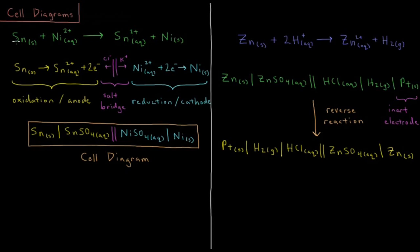The tin gets oxidized, loses two electrons to produce tin 2+. Those electrons then flow through a wire over to another half cell, where we have nickel cations which receive those two electrons and get reduced to nickel solid.